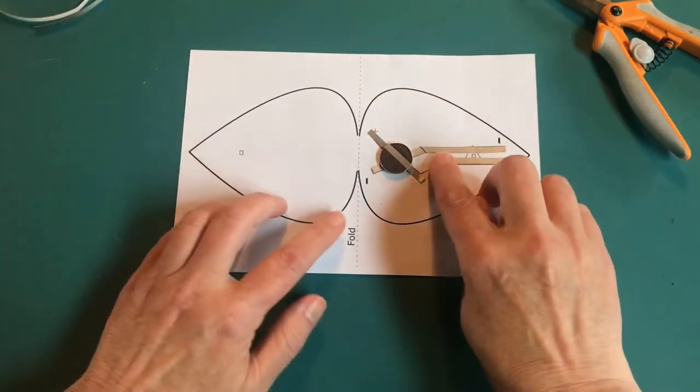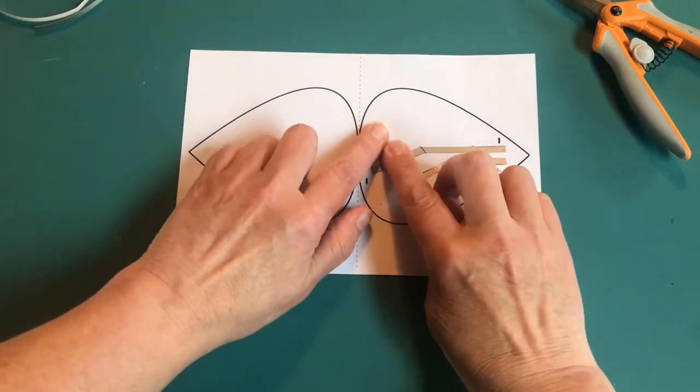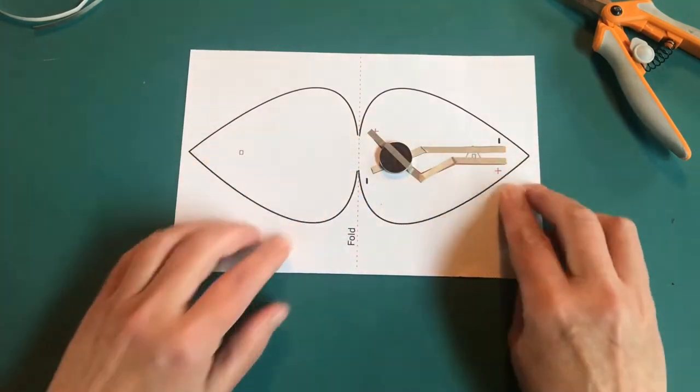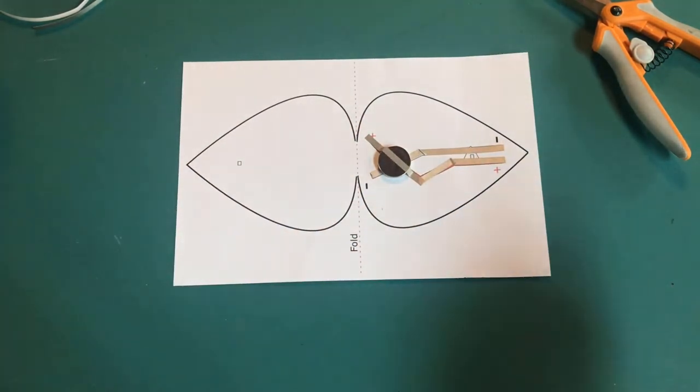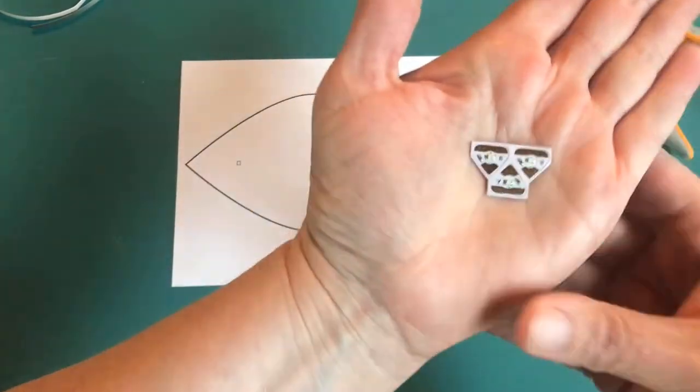And then the next part is the fun part. The next part is you're going to lay down a circuit sticker LED and make sure that everything is working the way it should.